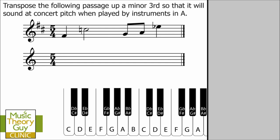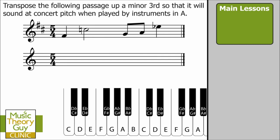Here's a very typical example or question you might come across in a music theory exam: 'Transpose the following passage up a minor third so that it will sound at concert pitch when played by instruments in A.' One of the reasons transposition is so tricky is because you need to know about other music theory topics first — specifically intervals, and accidentals and semitones. Have a look at my main lessons if you need to.